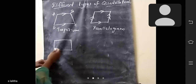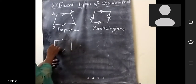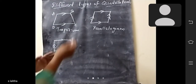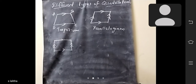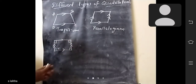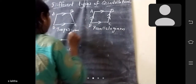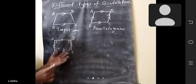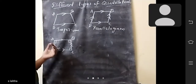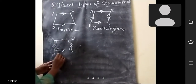Here, this line and this line are equal and also parallel. These two lines are parallel and these two lines are equal. What is the difference between parallelogram and rectangle? Here, all angles should be 90 degrees. That is the difference. Rectangle is also a type of parallelogram — the opposite pairs are equal and all angles must be 90 degrees, so that is why it is called a rectangle.